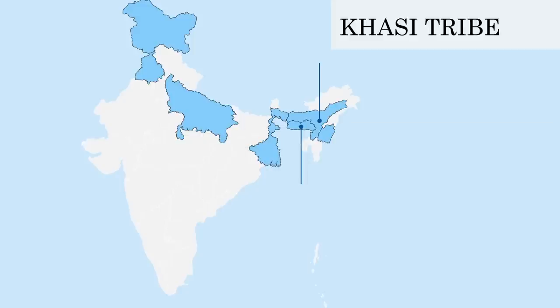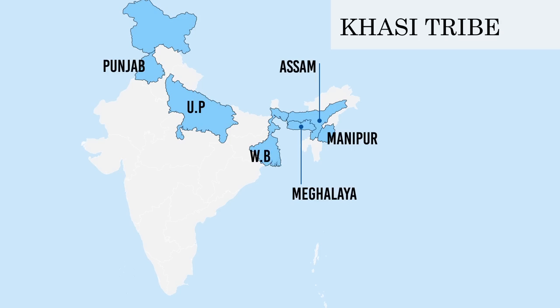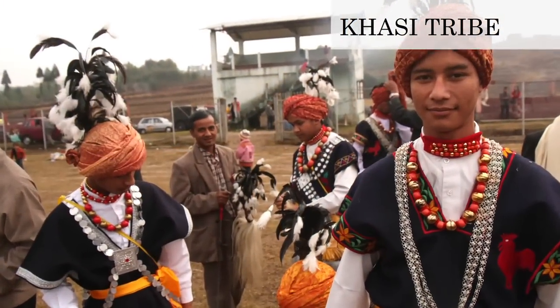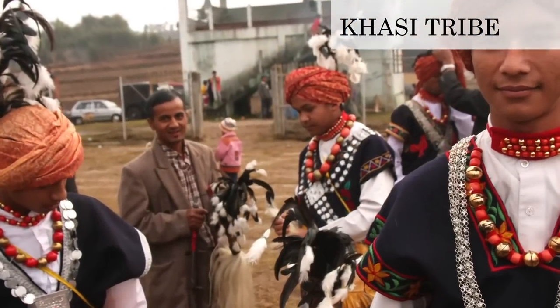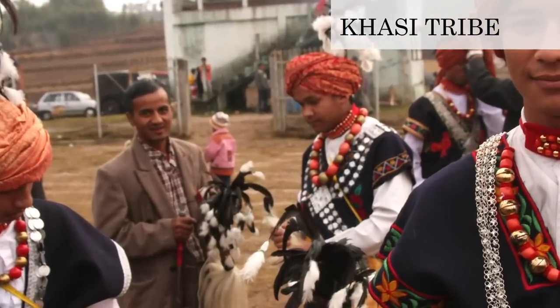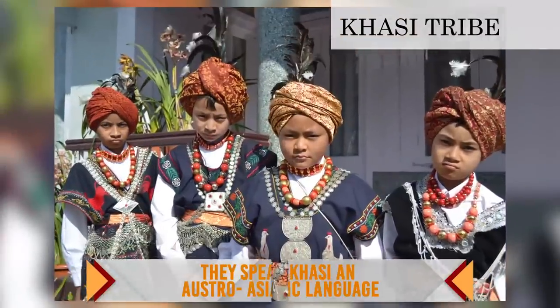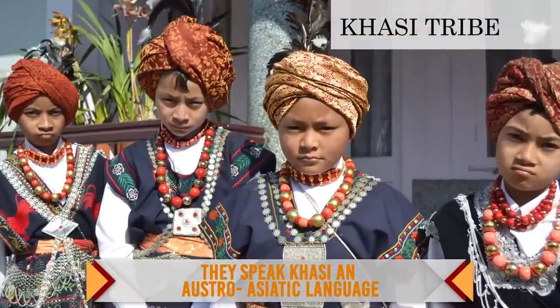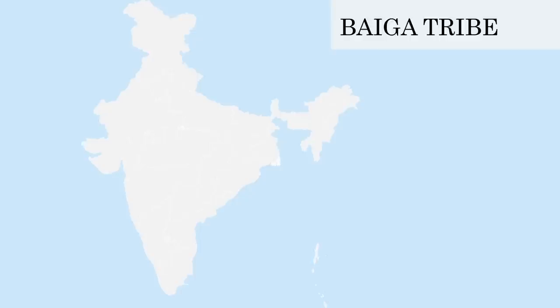Khasi Tribe: mainly found in the state of Assam and the Jaintia Hills in Meghalaya, they are also found in Punjab, UP, Manipur, West Bengal and Jammu and Kashmir. They are called by different names such as Khasi, Peris, Kasi and Khasa. They speak Khasi, which is an Austro-Asiatic language.